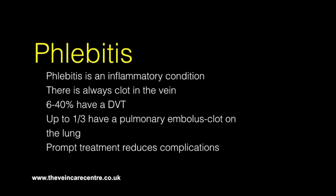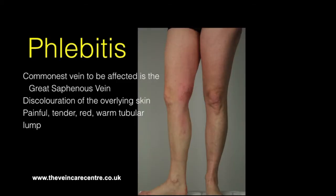Given the potential for serious complications, prompt recognition of the problem is paramount. The commonest vein to be affected is the great saphenous vein on the inner part of the thigh. The overlying discolouration of the skin marks out the course of the inflamed vein underneath.